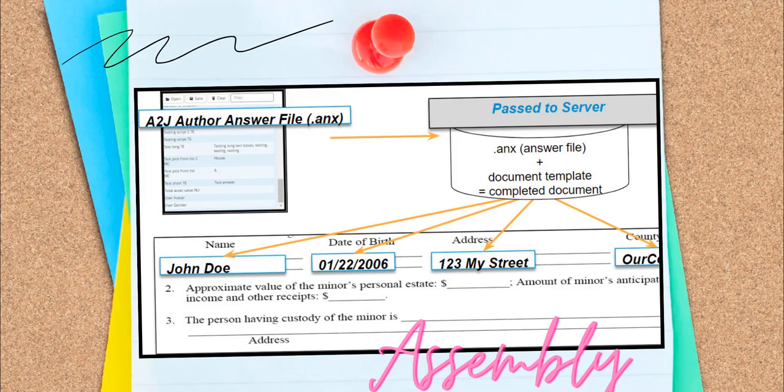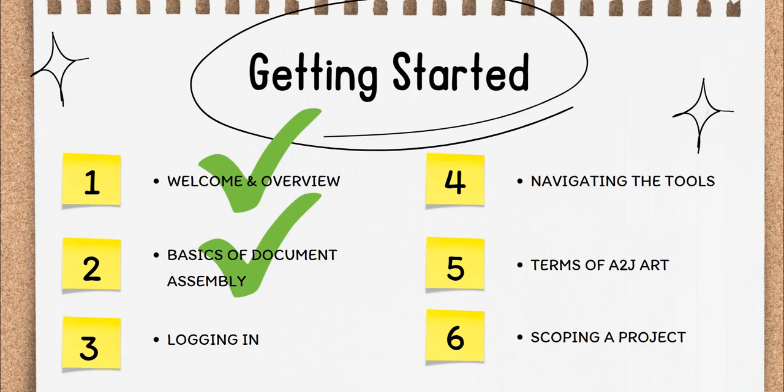In most cases, the final document is returned to the end user as a locally downloaded PDF. That is the high-level overview of document assembly. Congratulations, you've completed another part of Section 1, Getting Started.